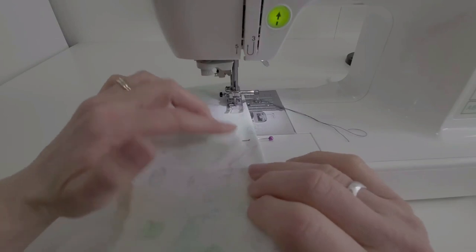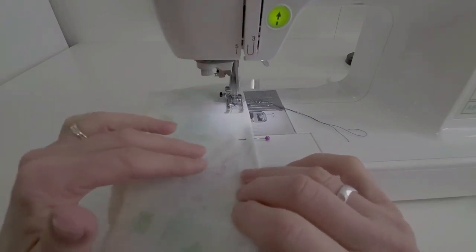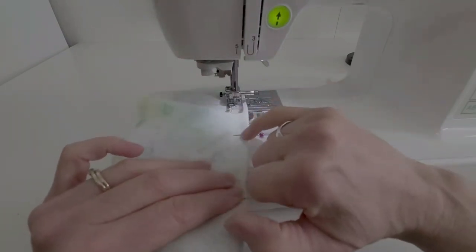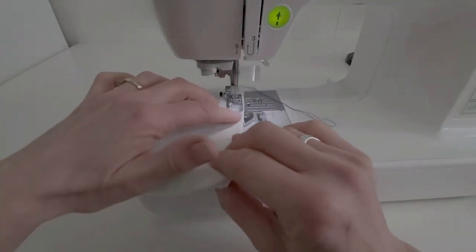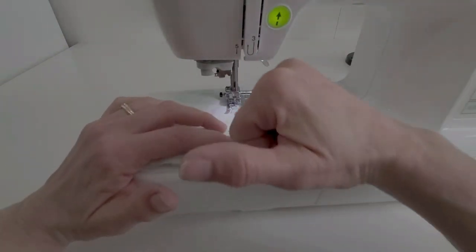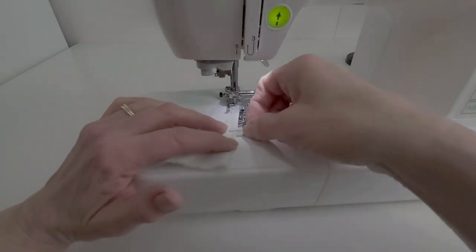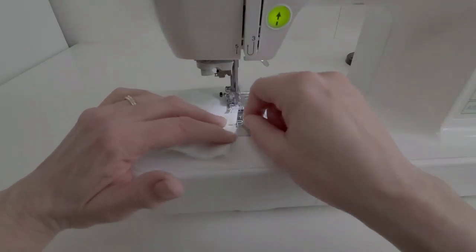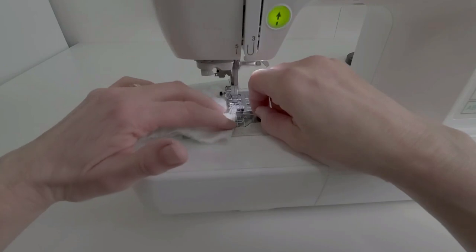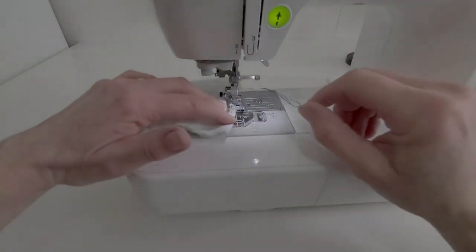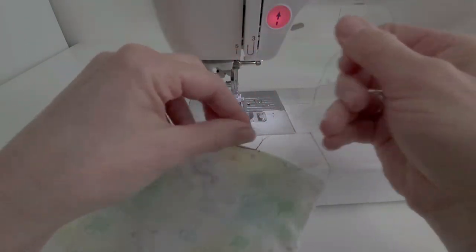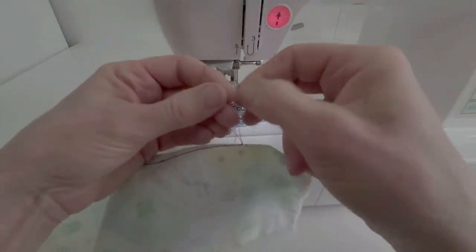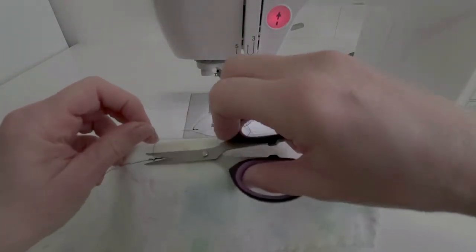Then sew a small section just parallel to the fold, and then angle so that I'm coming into that center dot. Then continue to taper off the fold at this point of the dart. I'll tie off my threads on this side and trim my threads from the center.